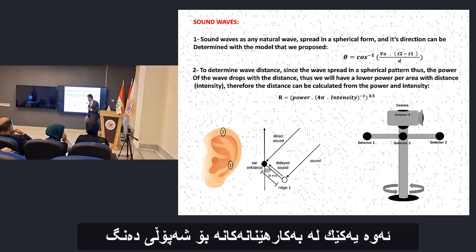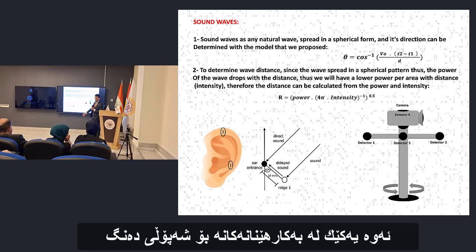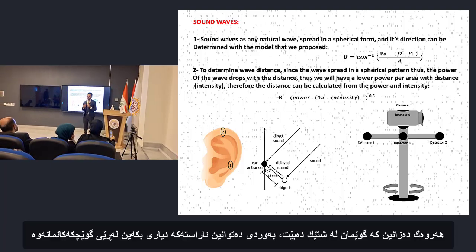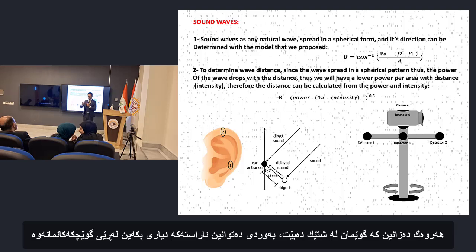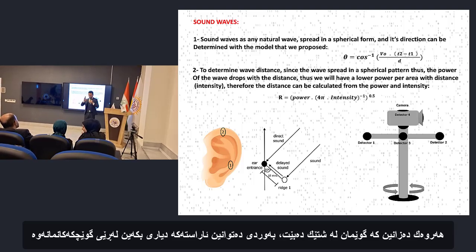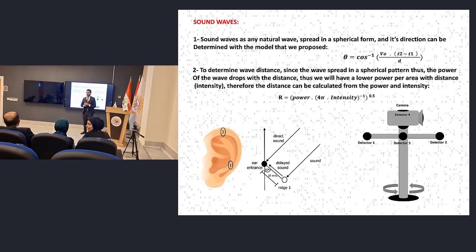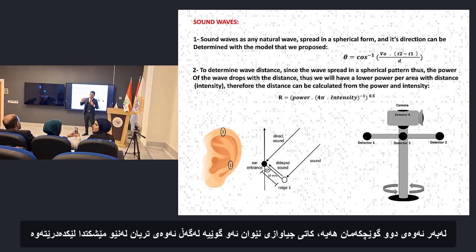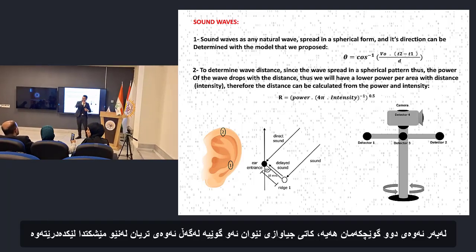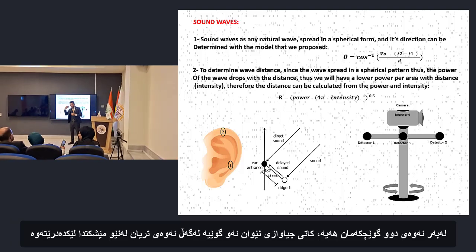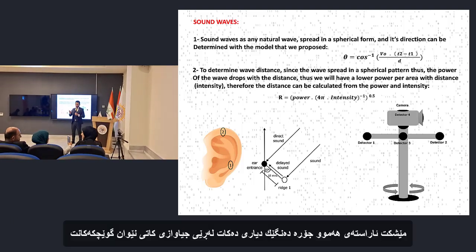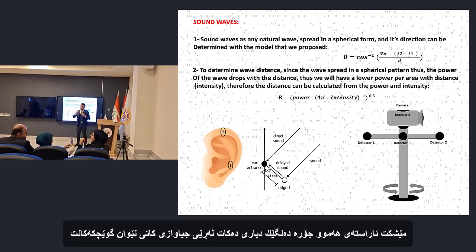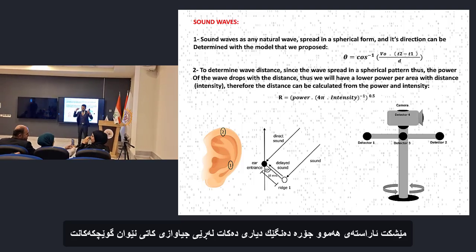This is one of the applications for sound. As we know, when we hear something, we can precisely determine the direction using just our ears. Because we have two ears, and the time difference between this ear and that ear is processed in your brain. So your brain determines the direction of any sound by the time difference between these two ears.